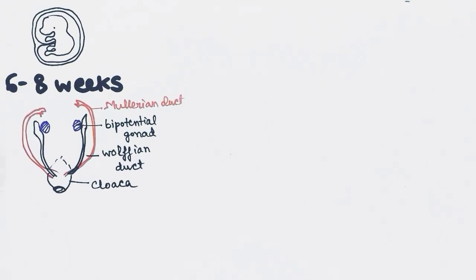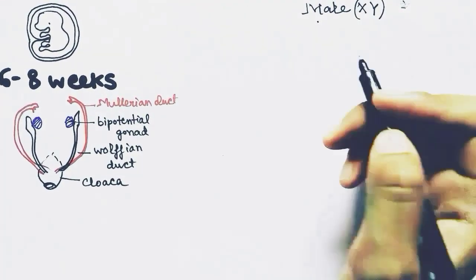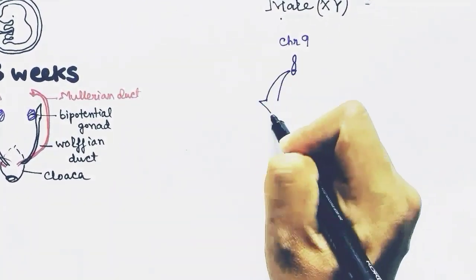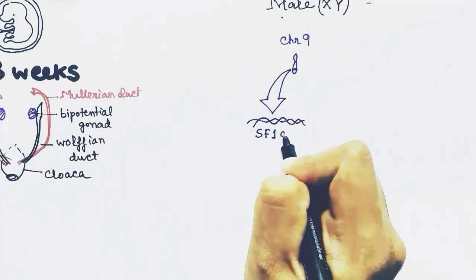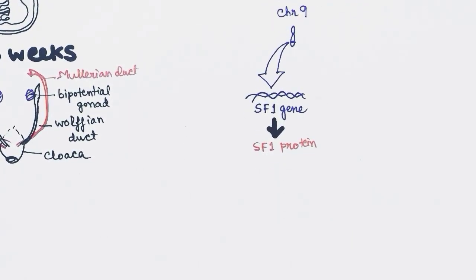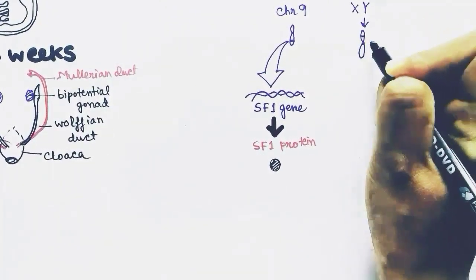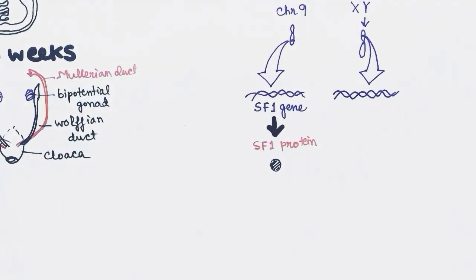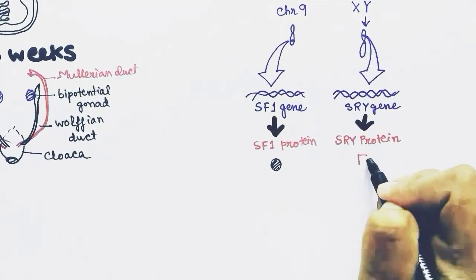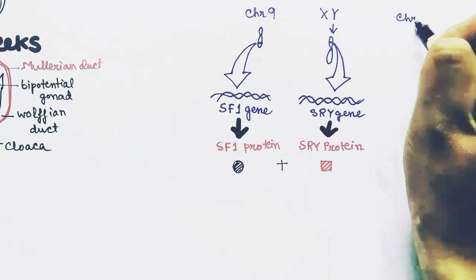For a male fetus having X and Y sex chromosomes, we first look at chromosome number 9, which is an autosome. It has a gene called the SF1 gene, which produces SF1 protein by transcription and translation. The Y chromosome has the SRY gene, which produces SRY protein. These two proteins — SF1 and SRY — form a complex, which is a DNA-binding protein.